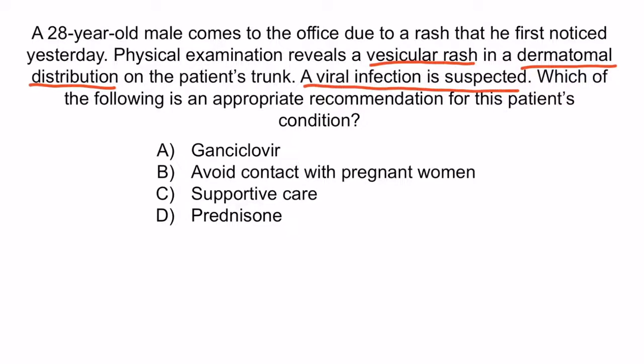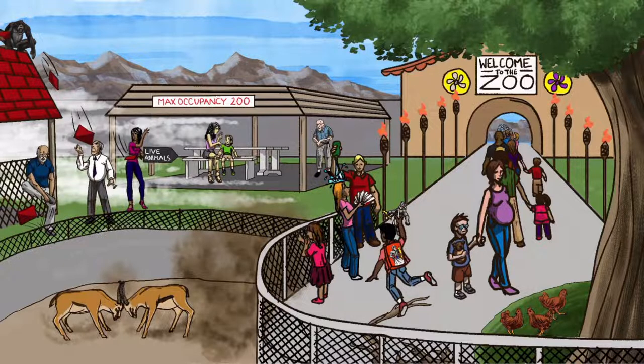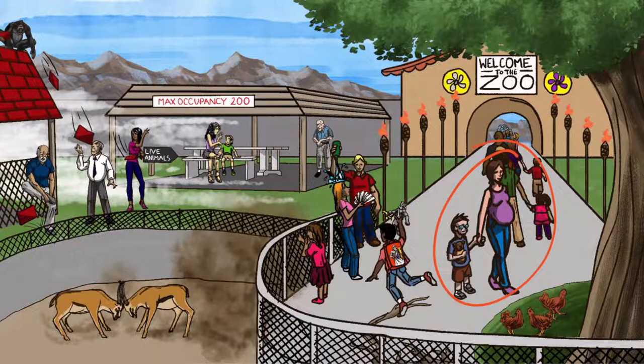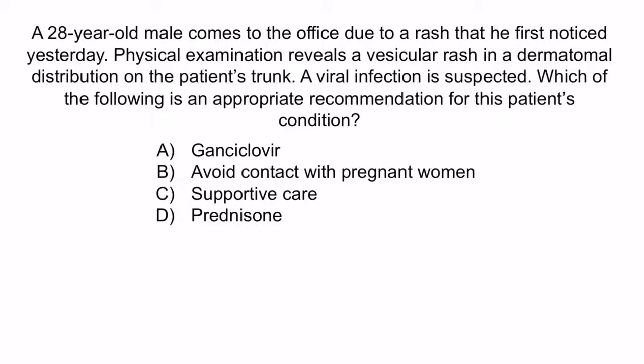An appropriate recommendation for shingles would be B — avoid contact with pregnant women. VZV can be particularly devastating for pregnant women by affecting the fetus and causing congenital varicella. Because of these devastating effects, patients with an active varicella infection should avoid contact with pregnant women. A is incorrect because ganciclovir is the treatment for cytomegalovirus, not VZV. C is incorrect because supportive care would not be advised, as this patient is presenting early in the course of infection — patients with shingles should generally be treated with acyclovir or valacyclovir.